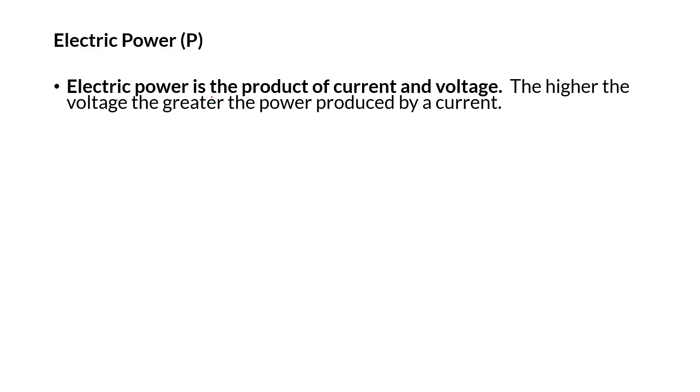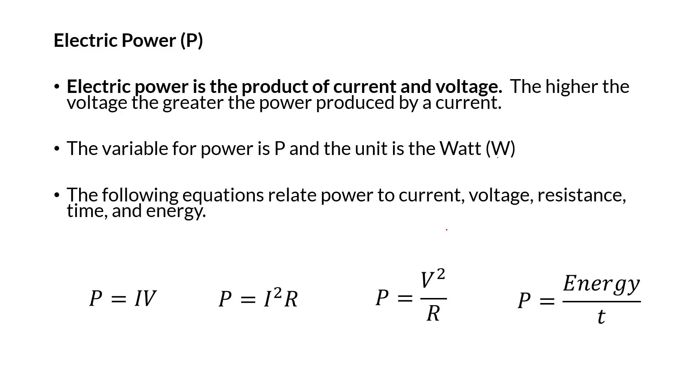Now we're going to look at power a little bit. Power is a product of current and voltage. Power is going to deal with the rate of the current. So the variable for power is P, and anytime you solve for power, whatever it might be, 20 watts, W is going to be the unit you'll put behind the number. And these are the different equations that relate power, voltage, and resistance. First, power is current times voltage. Power equals current squared times resistance. Power equals voltage squared over resistance. And then power equals energy over time, or work over time, which we've seen in the previous lesson.